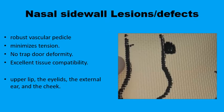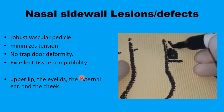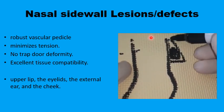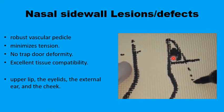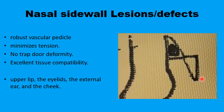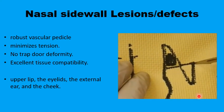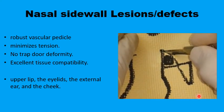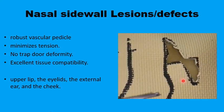Another common site for the east-west flap is nasal sidewall defects. You draw the primary triangle at the edge of the sidewall of the nose and the secondary triangle around the nasolabial fold. Once the two triangles are excised, the resulting scar tissue is hidden in the sidewall of the nose and the nasolabial fold.